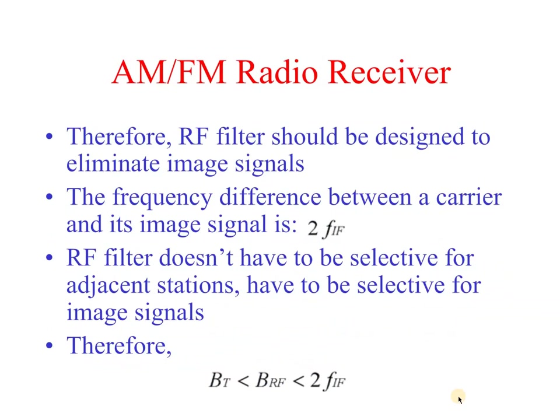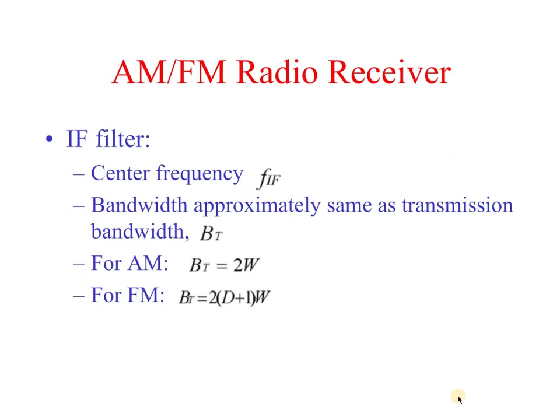The frequency difference between a carrier and its image signal is 2·FIF. The RF filter does not need to be selective for individual stations, but must be selective for image signals. Therefore, the RF filter bandwidth BRF should be less than 2·FIF but greater than BT. The IF filter has a center frequency of FIF and a bandwidth approximately equal to the transmission bandwidth BT: for AM, BT = ω, and for FM, BT = (D+1)ω.